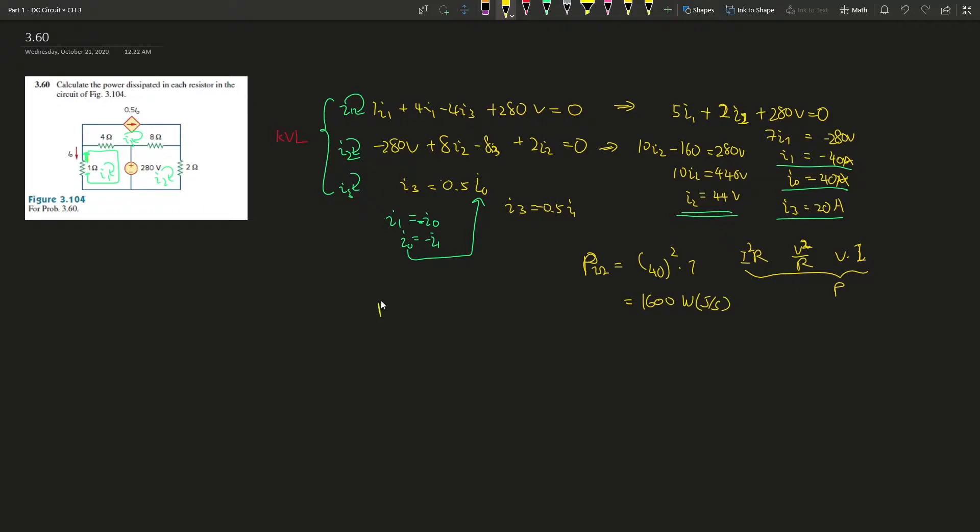Now we look at power at 4 ohm resistor. That is going to be I1 minus I3, so I1 is negative 40 minus 20 to the power of 2 times 4. So negative 40 minus 20 is negative 60 squared, which is 3600 times 4. That is going to give us 14,400 watts.